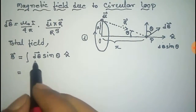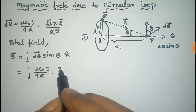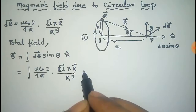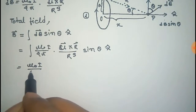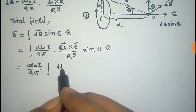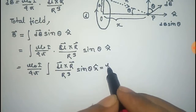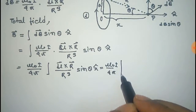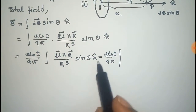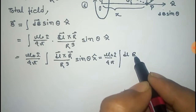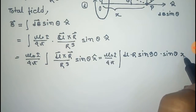Now we put the value of dB vector: that is mu-naught by four pi, i dl cross r by r cube, into sine theta, x-cap. Mu-naught i by four pi is constant so it comes out of the integration. Now, dl and r vector are perpendicular to each other — the angle between dl and r is 90 degrees — so we can write dl cross r as dl times r times sine 90 degrees, into sine theta by r cube, x-cap.